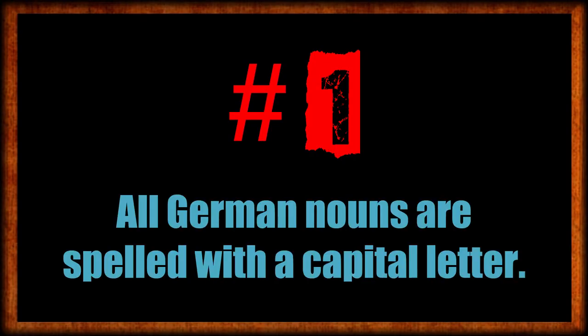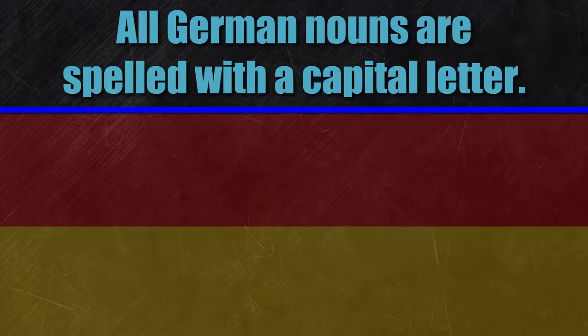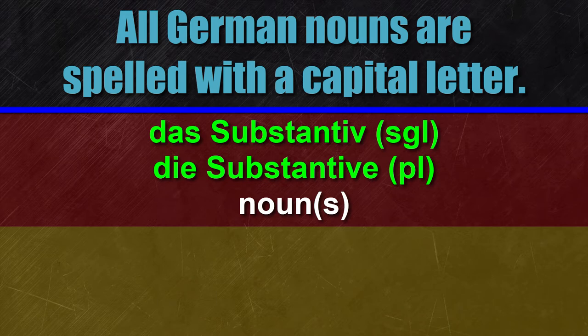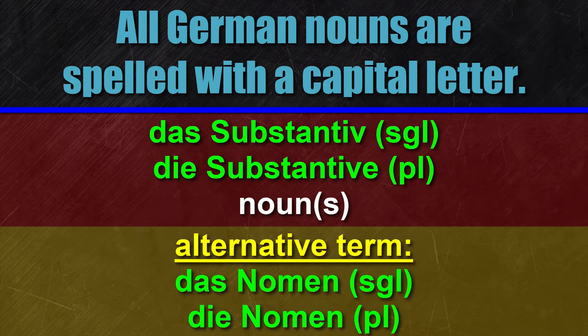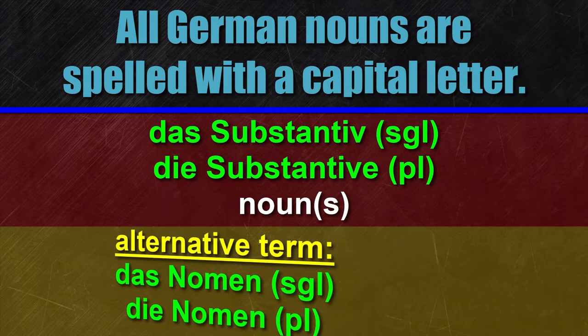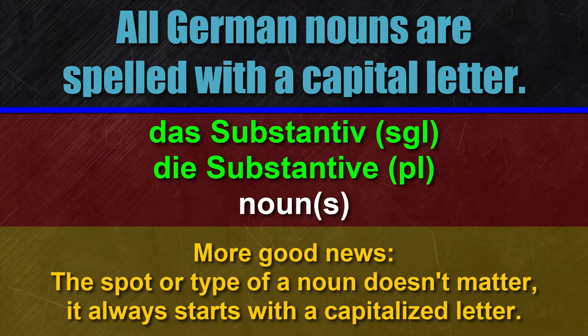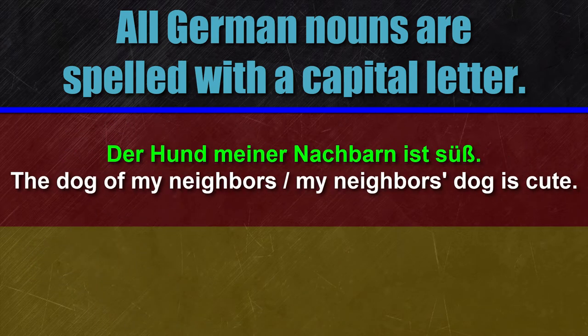Rule number one — a very simple and basic one: all German nouns are spelled with a capital letter. German nouns are called 'das Substantiv' (singular), 'die Substantive' (plural), and people might also refer to them as 'das Nomen' (singular), 'die Nomen' (plural). This spelling is actually a major difference to the English language. It doesn't matter if it's the first, the last, or a word in the middle of a sentence — German Substantive are always spelled with a capital letter.